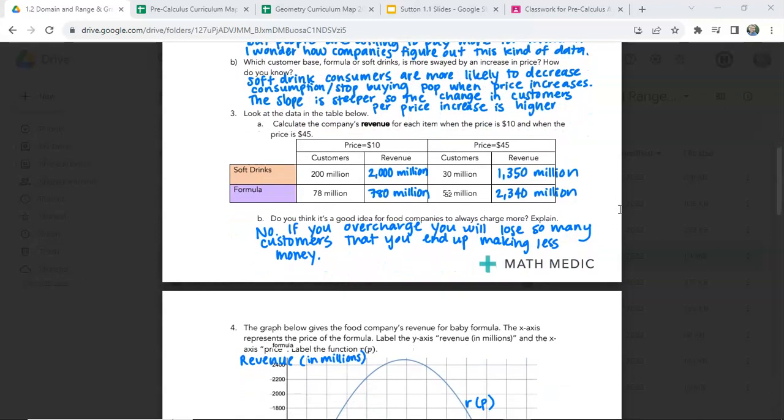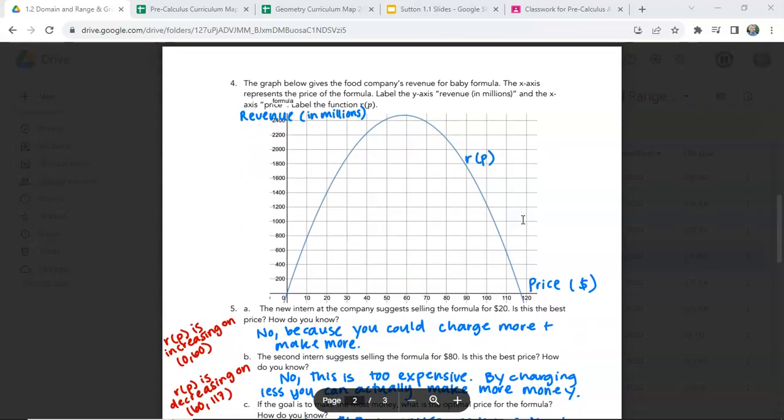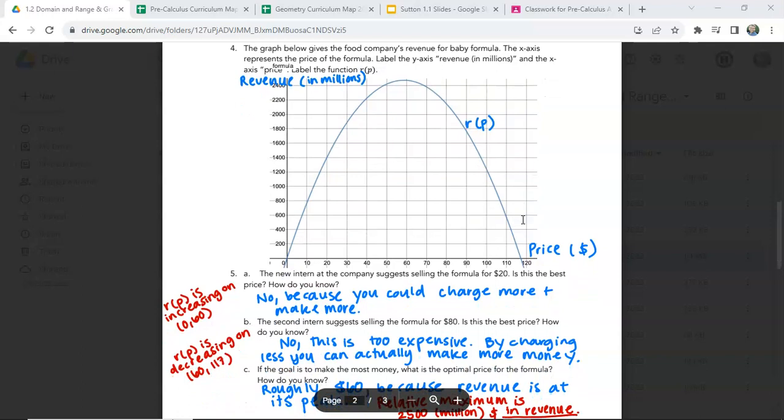So let's look at this data here. Do you think it's a good idea for companies to always charge more? No. If you're overcharging, you'll lose money because you'll lose customers. So if you have less customers, then you'll make less money. The graph below gives the food companies a revenue for baby formula. The x-axis represents the price of the formula. Label the y-axis revenue in billions. So that should look like that.